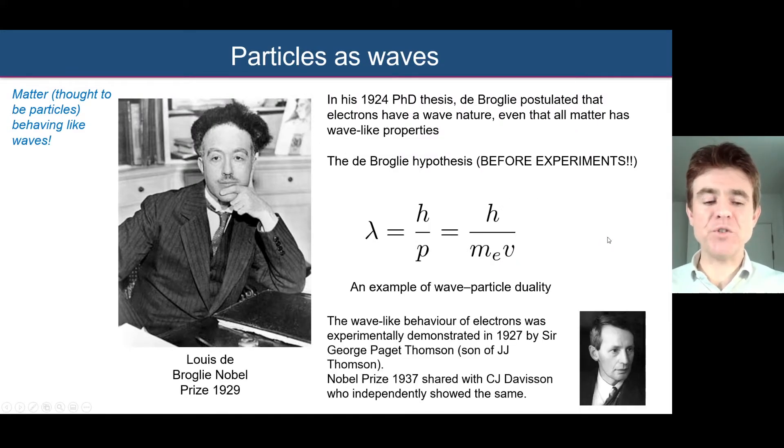This wave-like behavior of electrons has been experimentally demonstrated and it was done in 1927 by Thomson, son of the famous J.J. Thomson who discovered the electron. In 1937, Thomson shared the Nobel Prize with C.J. Davison who had independently also demonstrated this electron interference pattern. Louis de Broglie won the Nobel Prize in 1929 because of those experiments actually confirming his 1924 hypothesis.